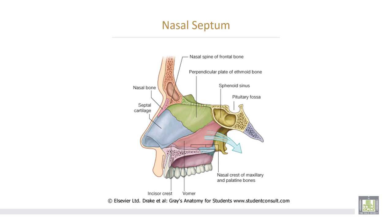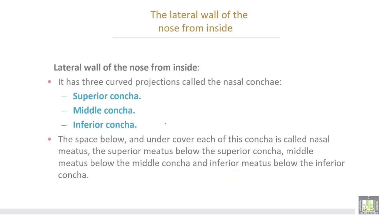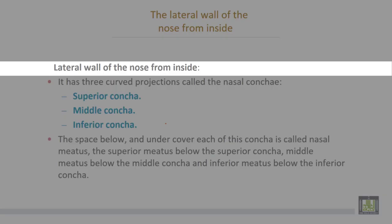The medial wall of the nose or nasal septum is formed by three parts: number one, the perpendicular plate of the ethmoid bone; number two, the vomer bone; and number three, the septal cartilage.